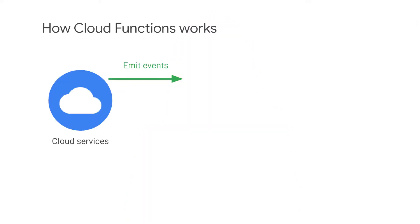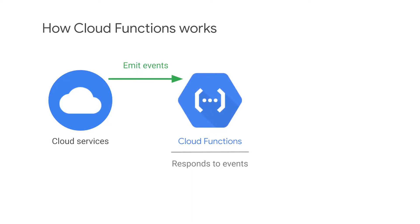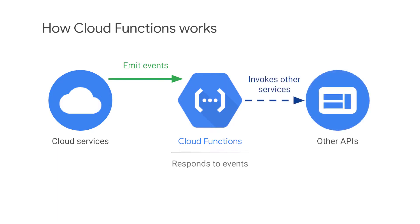A cloud service emits some kind of event — this can be a PubSub message, a change to a cloud storage object, or a webhook, for example. The event kicks off a cloud function, which can be written in Node.js, Python, or Go. The function can then invoke other services and write back the results. Building infrastructure is not required when leveraging Cloud Functions.